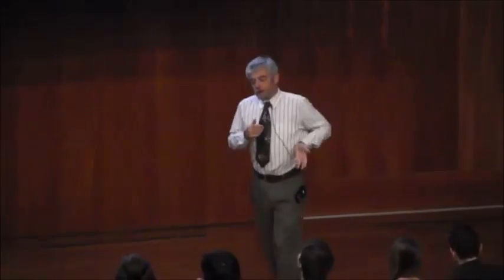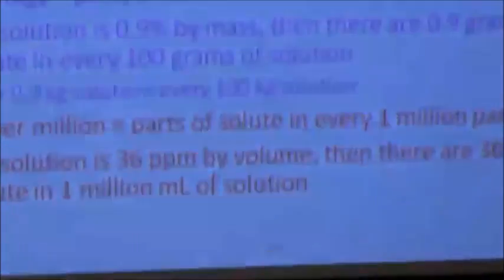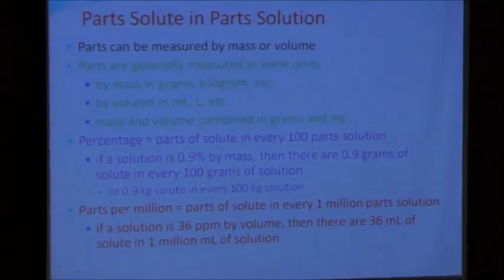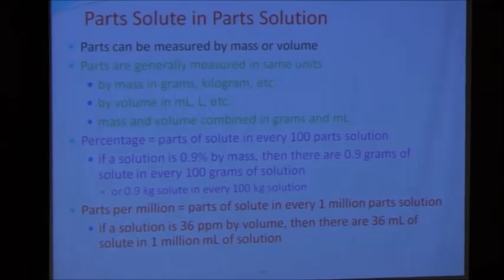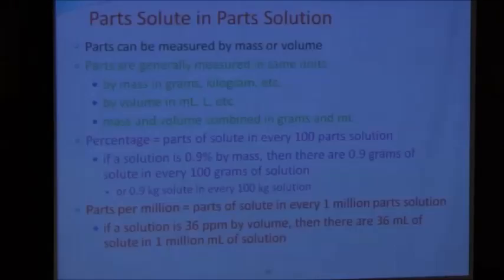We can also do ratios. So we can do percent, parts per million, or parts per thousand. For example, grams of solute per 100 grams of solvent is doing a ratio. There are many ways we can do this — 'parts per' is a generic way of expressing concentration.